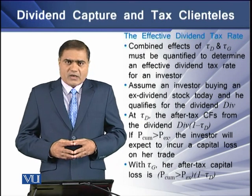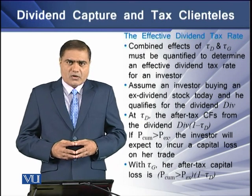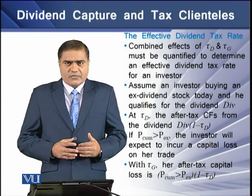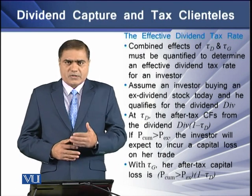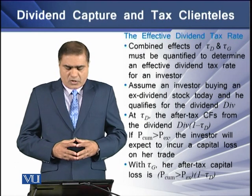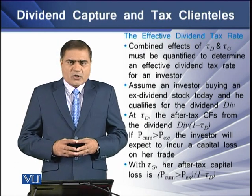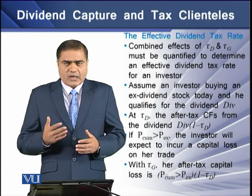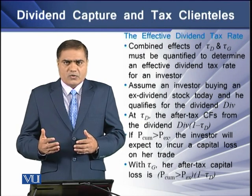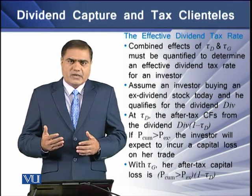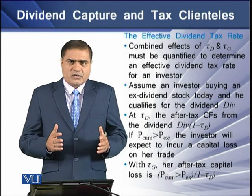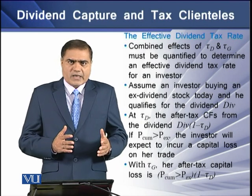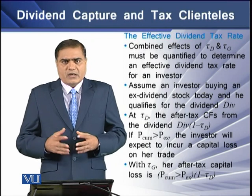This means that with the tax rate on capital gain, the after-tax loss of this particular investor will be equal to the excess of the price when the share is trading cum-dividend over the price when the share is trading ex-dividend. This differential is multiplied by (1 minus tax on capital gain).